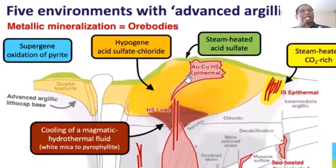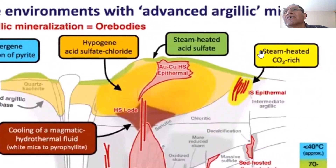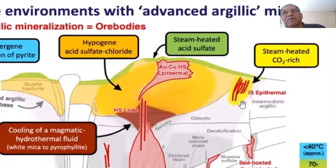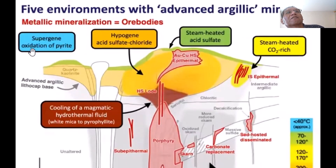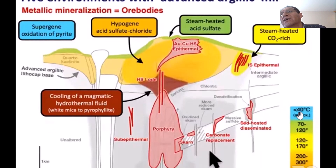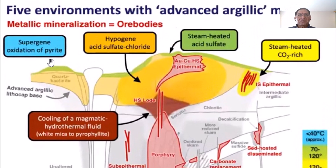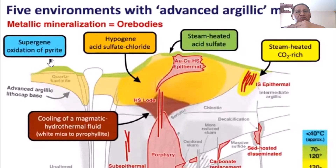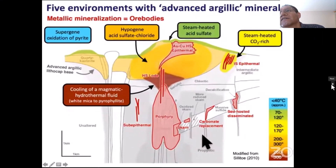Number four is the steam-heated, carbon dioxide-rich alteration. This we used to call intermediate sulfidation; now we are going to call it intermediate argillic. And number five, the supergene oxidation of sulfides — temperature going to be less than 40 degrees. Something very important in this supergene environment is gold enrichment — gold gets concentrated by gravity. So as erosion goes down and down, the surface is going to be richer, and deep we're going to have the primary mineralization, but the primary mineralization will be lower grade than the surface. That's the greatest advantage of supergene development.